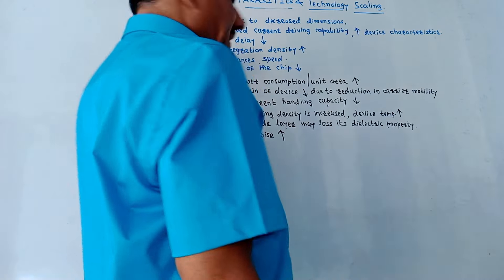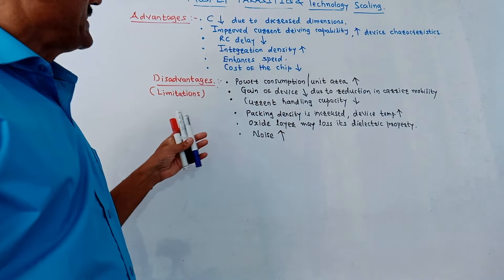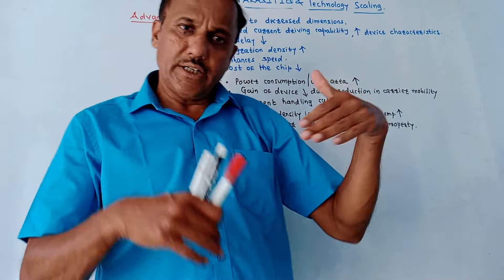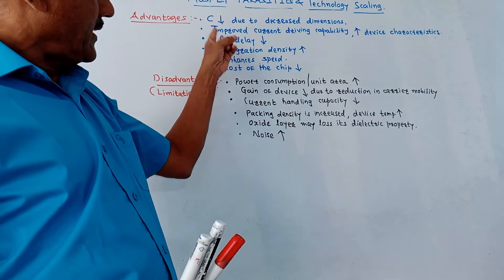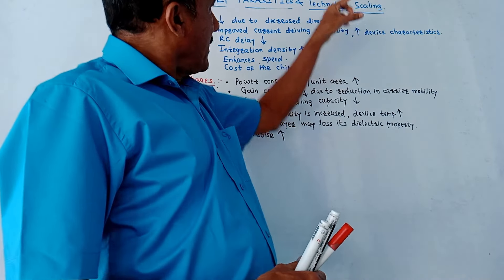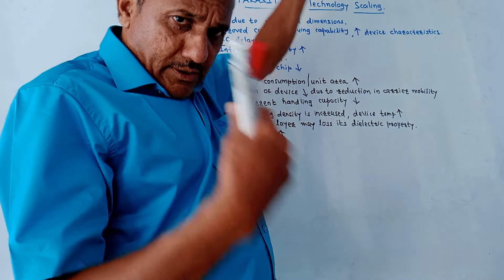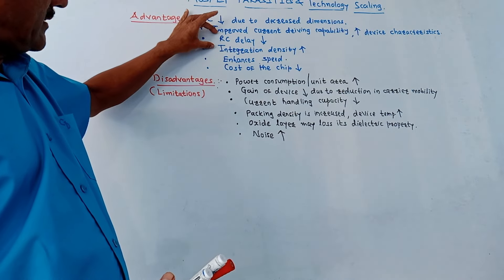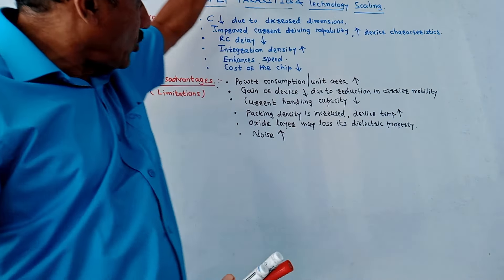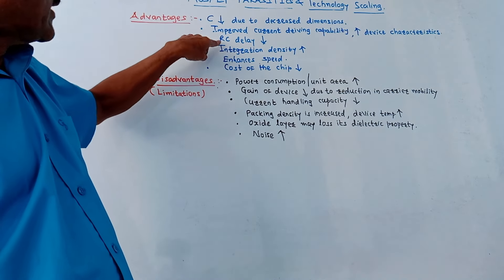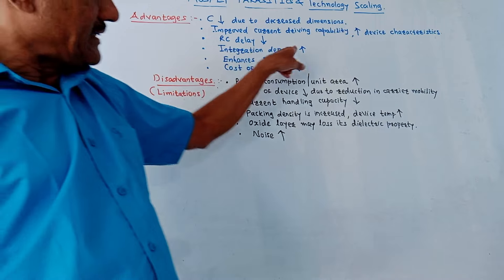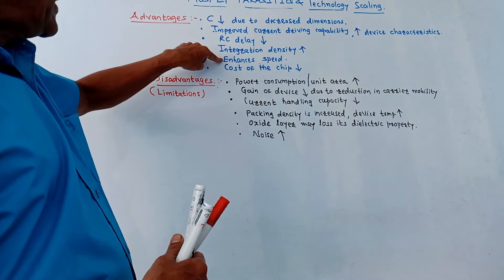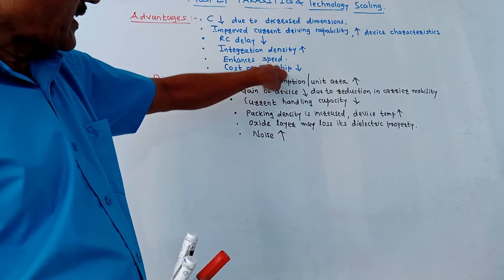Let us discuss the advantages and limitations of technology scaling. Advantages: capacitance is reduced due to decreased dimensions; improved current driving capability due to reduction in dimensions; RC delay decreases; integration density increases naturally because more devices are accommodated in a single chip; speed is enhanced and cost of the chip is reduced.